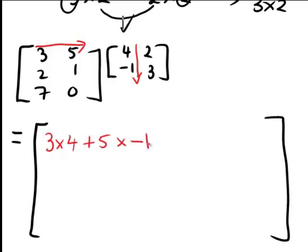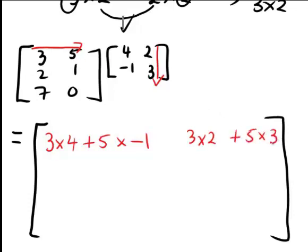Similarly, if we're going to the next part to get the element in the first row and second column of AB, again we'd go across the first row of A and now down the second column of B, which gives us 3 times 2 plus 5 times 3.